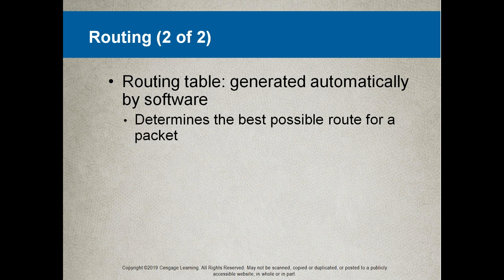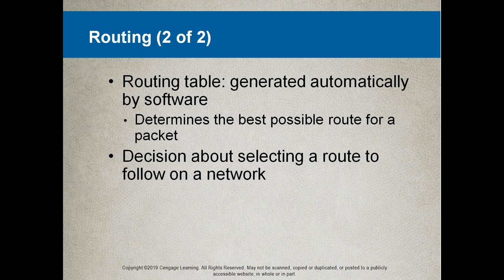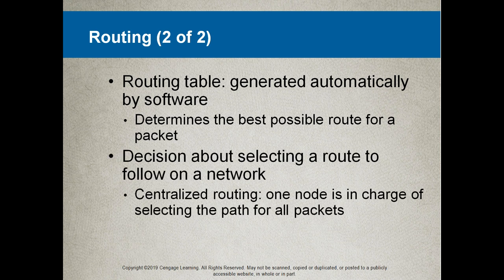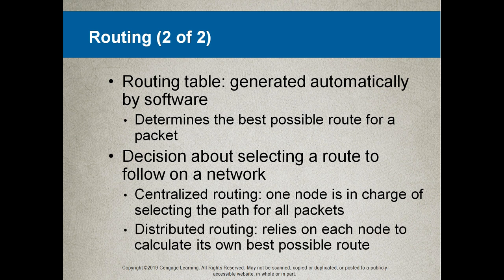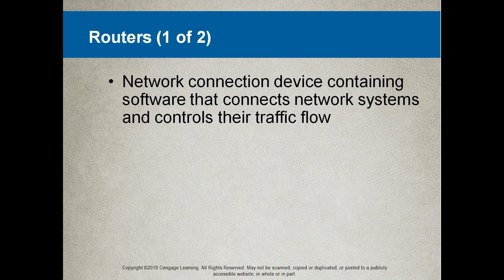A router determines the best possible route for a packet. The decision depends on the speed of that link and the latency — in other words, how long it takes for data to travel over that link. Centralized routing is where one node is in charge of selecting the path for all packets. Distributed routing relies on each node to calculate its own best possible route.